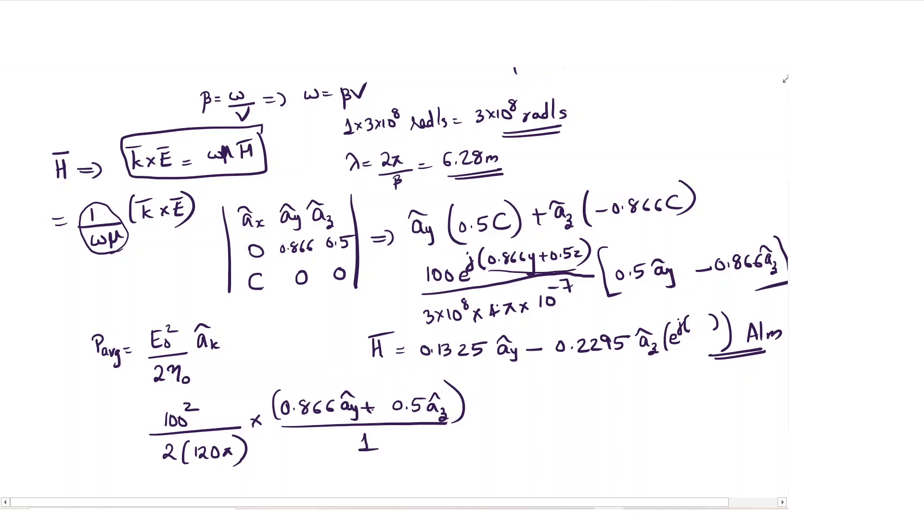This is the final answer and again on multiplying you will be getting 11.49 into unit vector ay plus 6.63 into unit vector az watt per meter square. This is the average power.